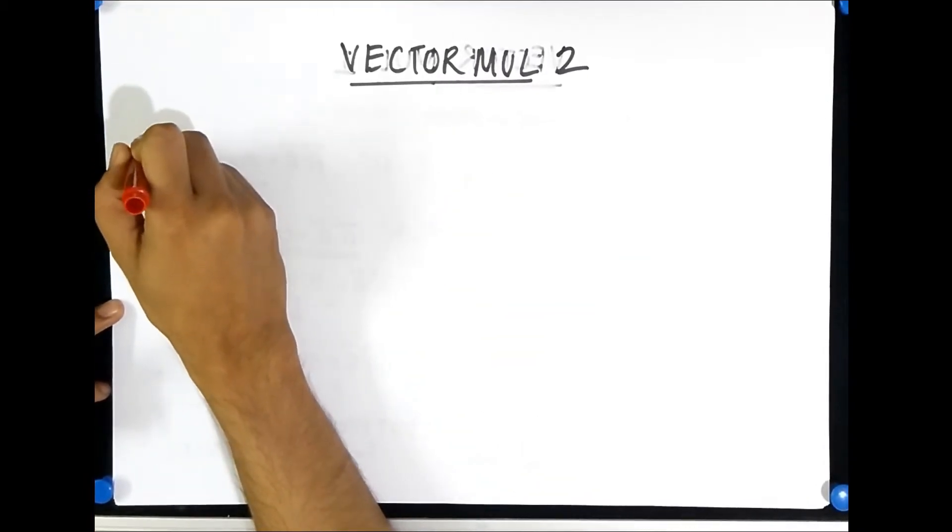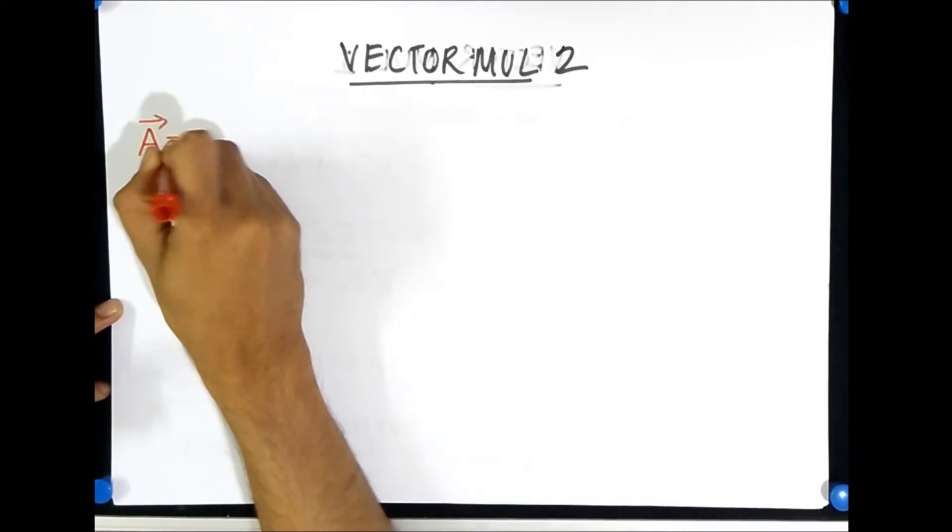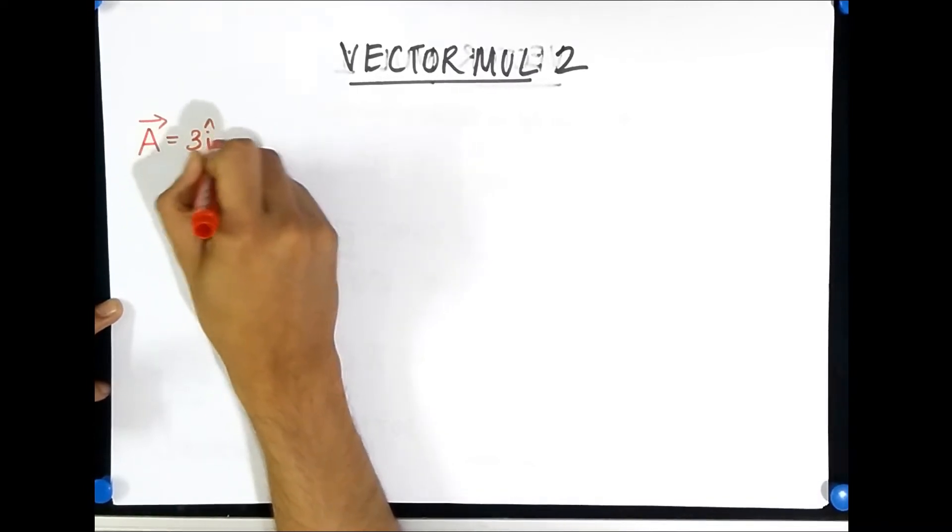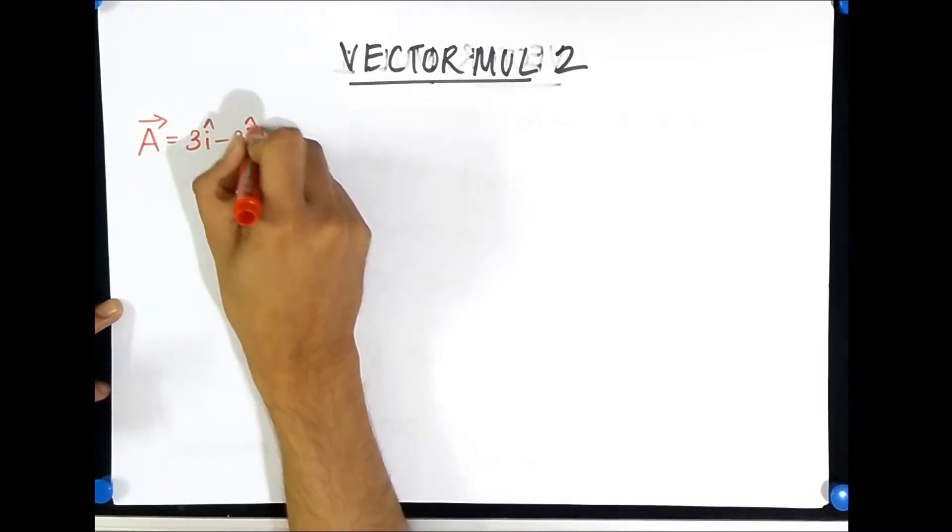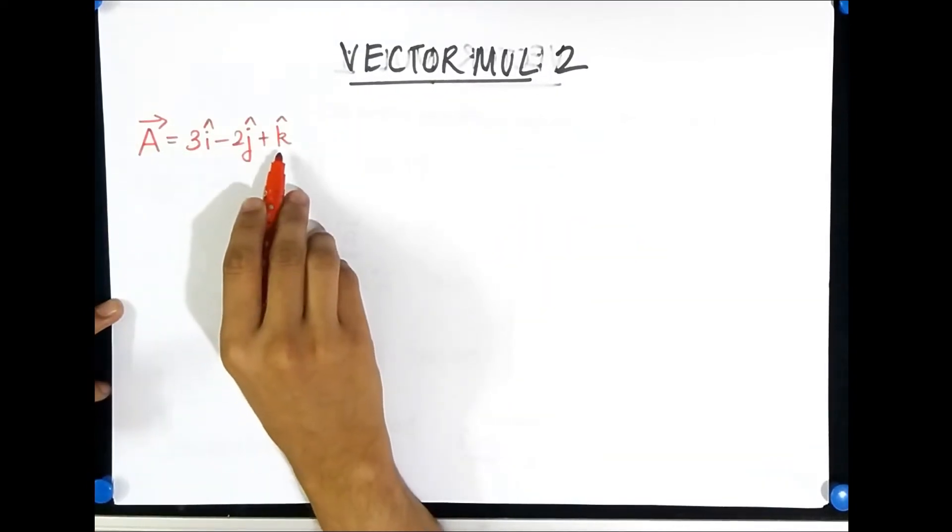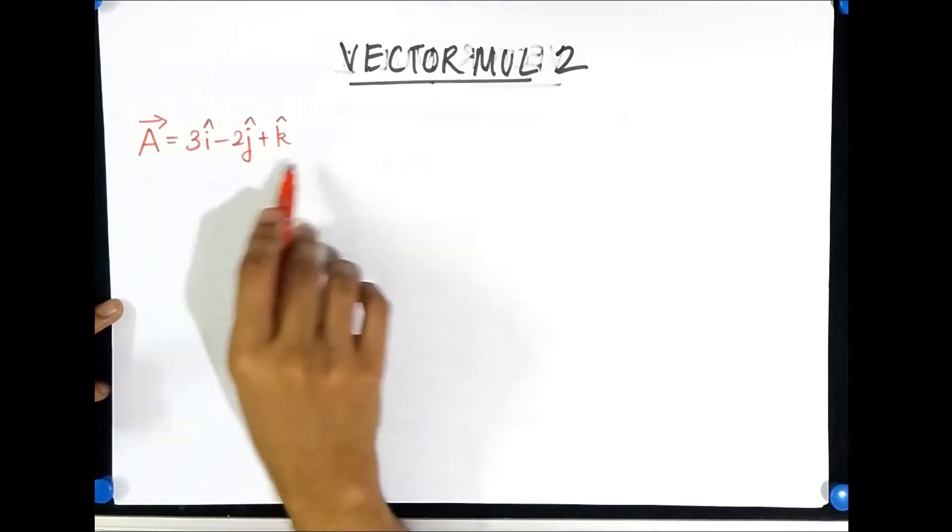So let's say you have been given vector A in the Cartesian format and that is something like 3i cap minus 2j cap plus k cap. Now you may be wondering where did this k cap come from, we never talked about k cap but k cap is the unit vector in z direction, that means this is a 3 dimensional vector.